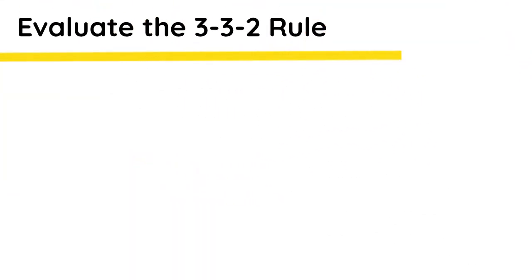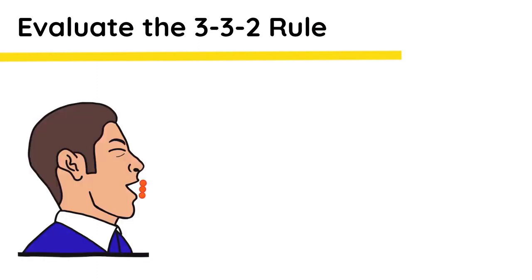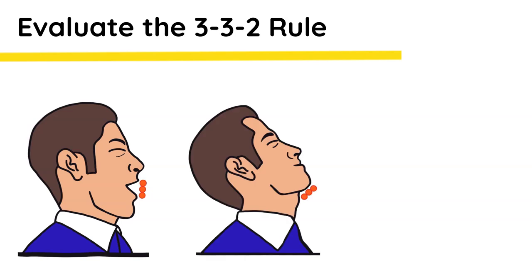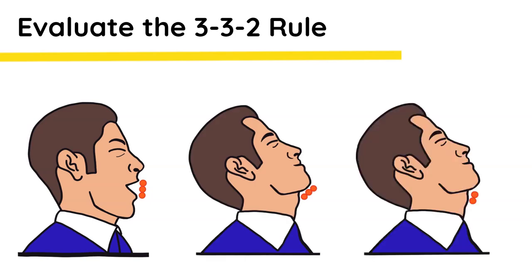Evaluate the 3-3-2 rule. Ideally the patient will have a 3-finger mouth opening, 3 fingers from the tip of the chin to the hyoid bone, and 2 fingers from the hyoid bone to the thyroid cartilage.